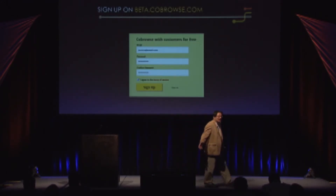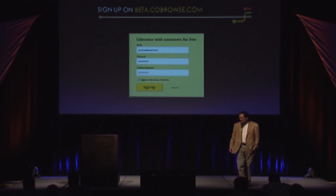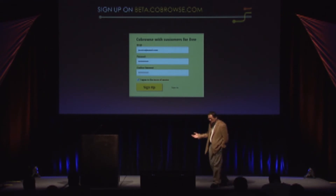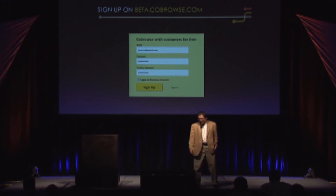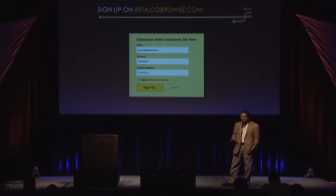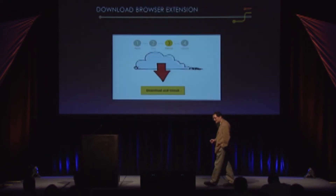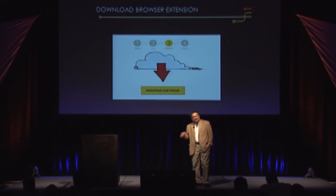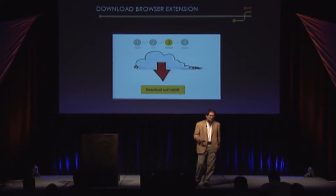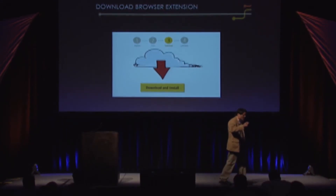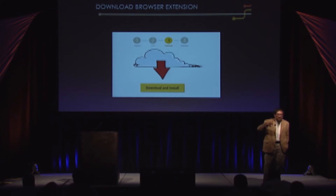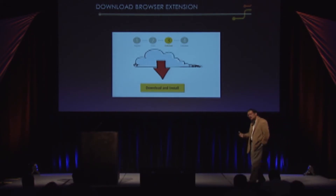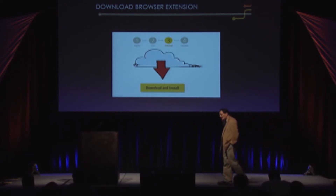If you want to sign up, all you have to provide is three pieces of information: your email, a password — just type it in correctly twice — and agree to our terms of service. That's it. Very low overhead. Then, depending on what browser you're using, if you're using Chrome, it'll go to the Chrome Web Store for a very simple one or two-click install process. Now your browser is enabled.